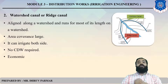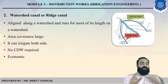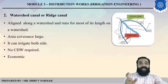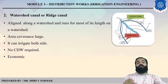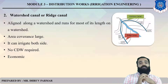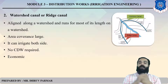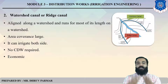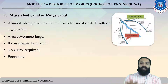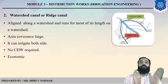The second type is the watershed or ridge canal. The watershed canal means the alignment of the canal follows the catchment area or watershed. This canal covers a very large area and irrigates both sides. In this type of canal, no cross drainage work is required, and it is also an economical canal — considered the best or base canal.